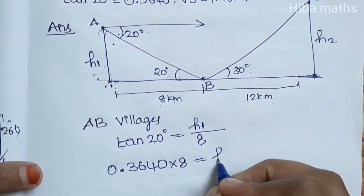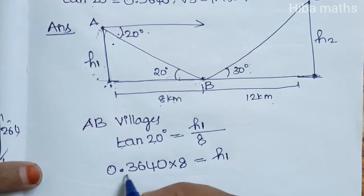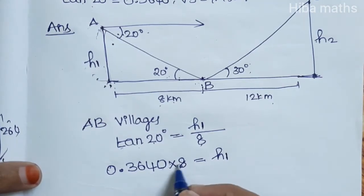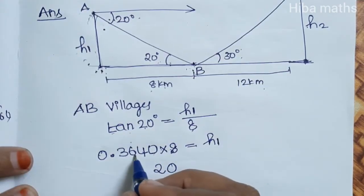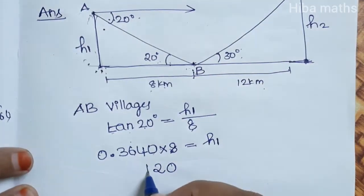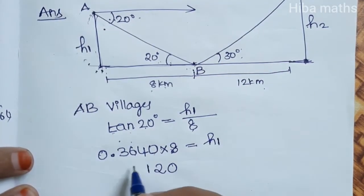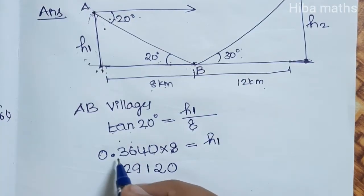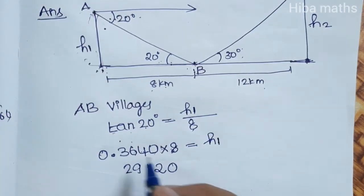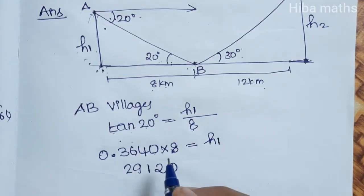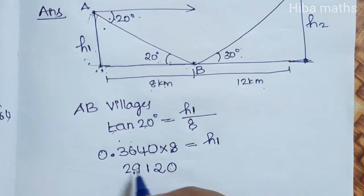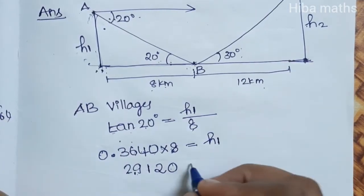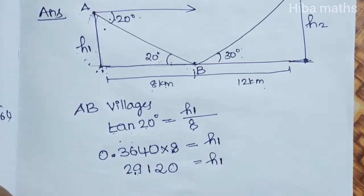Now 0.3640 into 8 is equal to h1. In the multiplication: 8 times 4 is 32, carry 3. 8 times 6 is 48 plus 3 is 51, balance 5. 29.0, we get 2.9120 is equal to h1.